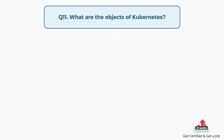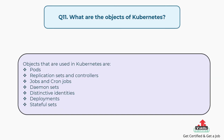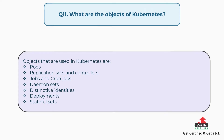Question number eleven: What are the objects of Kubernetes? The objects used in Kubernetes are: pods, replication sets and controllers, jobs and cron jobs, daemon sets, distinctive identities, deployments, and stateful sets.